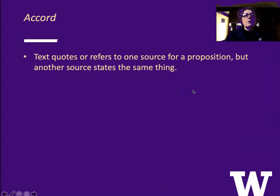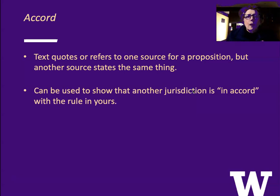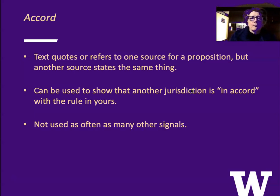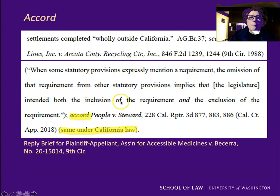Accord means that the text refers to one source for a proposition, but you use accord when you're bringing in another source that states the same thing. You can use it to show that another jurisdiction is in accord with the rule that you just stated. It's not used as often as many other signals. For example, here is a brief that cites a Ninth Circuit case stating a rule from federal court, and then says 'accord, People v. Steward,' with a parenthetical saying it's the same under California law.